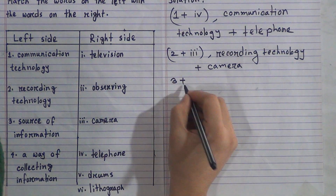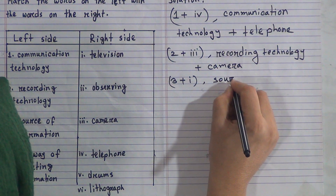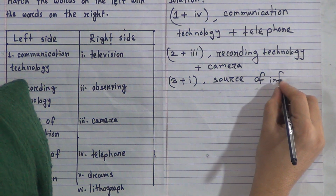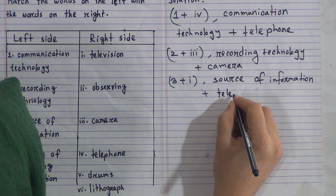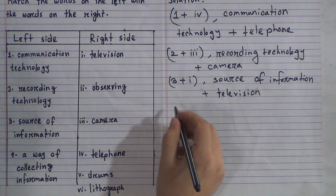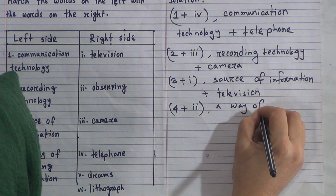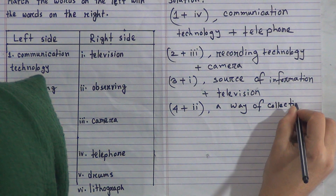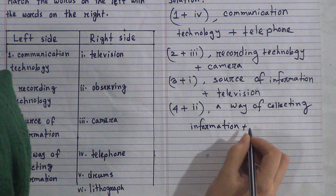So we write three plus one: source of information plus television. Number 4, the last one — a way of collecting information — will be matched with observing. So number four will be matched with number two. We write four plus two: a way of collecting information plus observing.